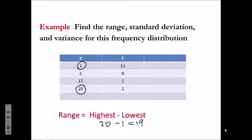To calculate the other two measures, the standard deviation and the variance, we're going to have to calculate the mean of the distribution first. If you recall from a frequency distribution, if we're doing it by hand, we would multiply the X column by the F column and get 11, 2 times 9, 18.